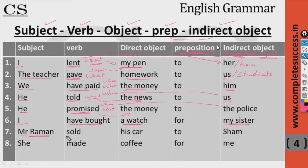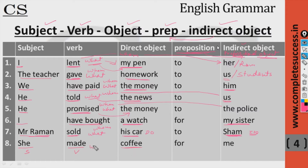Mr. Raman sold — what? — his car — to whom? — to Sean. That is the direct object and the indirect object. She is the subject, 'made' is the verb, 'coffee' is the direct object — she made what? Coffee. For whom? For me — that is the indirect object.